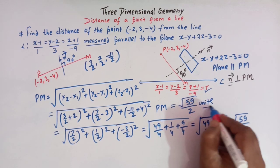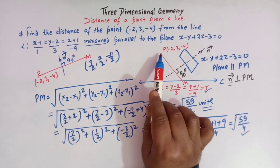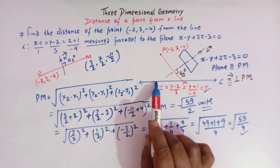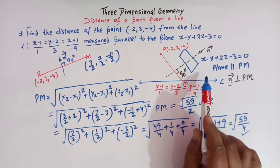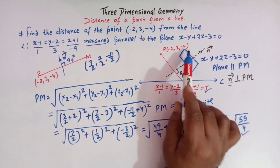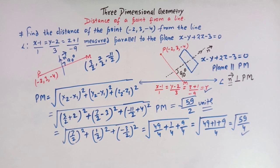So the distance between P and M is √59 / 2 units. This is how we find the distance of a point from a line measured parallel to a given plane.